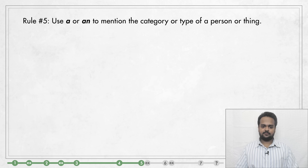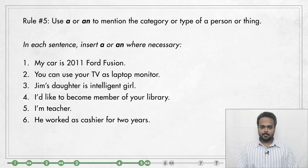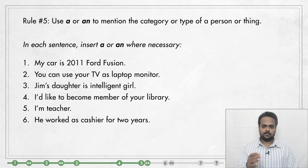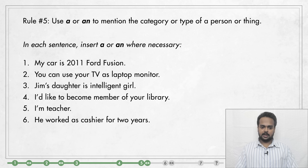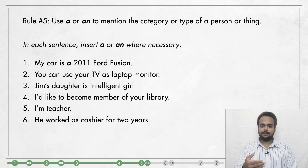Alright, let's move on to rule number five: use A or AN to mention the category or type of a person or thing. To understand this, I have a small exercise for you. All of these sentences mention a category or type of a person or thing, but they're missing the articles. I want you to put A or AN in the correct place in each sentence. Stop the video, think about your answers, then play the video again and check.